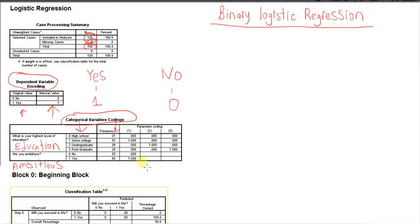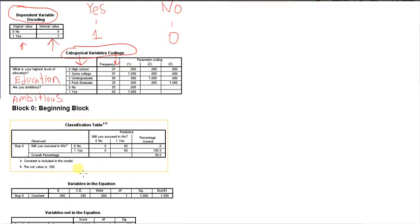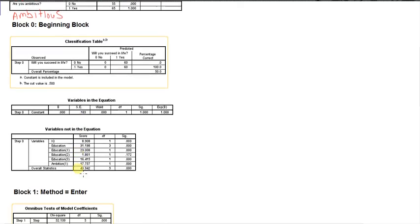That's the descriptive section of my binary logistic regression output. In the next video I'm going to be moving on to what's called Block Zero, or the Beginning Block. Thanks for watching — check out the next video.